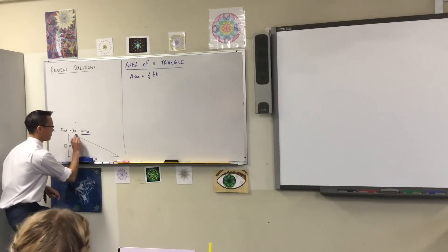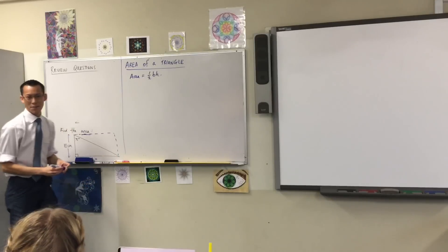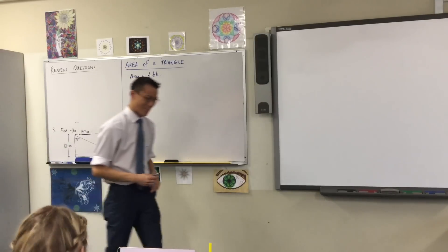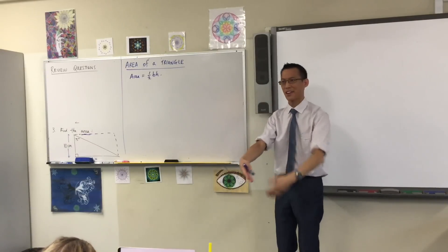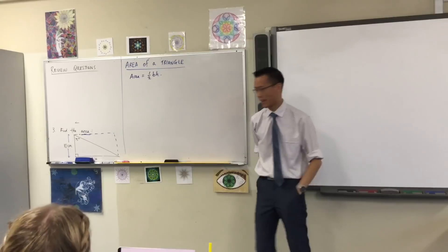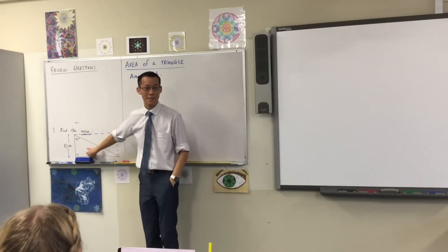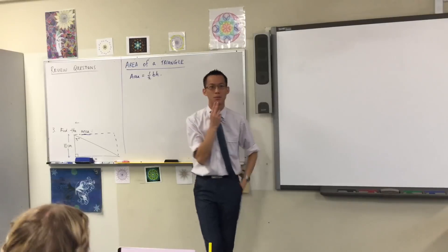Every triangle can be placed inside a rectangle that is exactly double its area. You only want one half of that because it's the triangle part. That's where the fraction comes from.